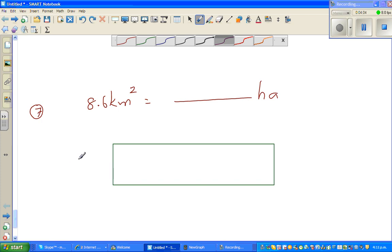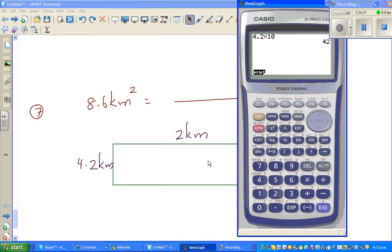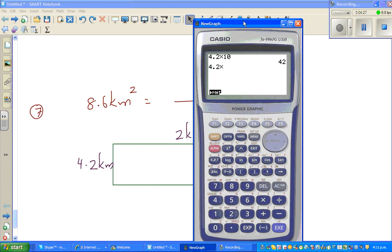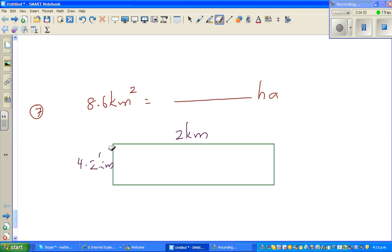I would say this is 4.3 kilometers times 2 kilometers. Is that right? Let me check. 4.3 times 2, it should be, I was not confident. So if you divide this by 2 it would be 4.3 kilometers. What I'm saying is this times this is 4.3 times 2 is 8.6.